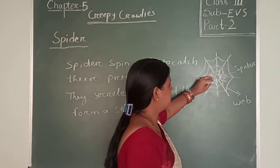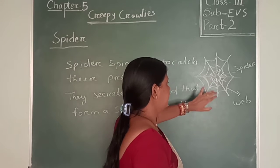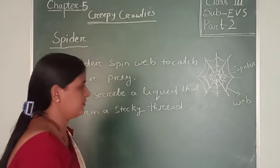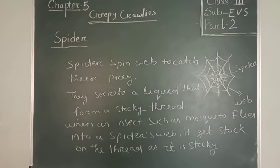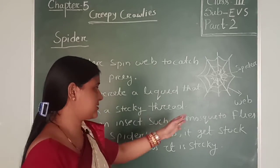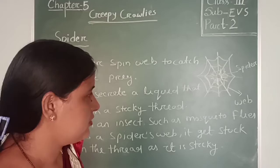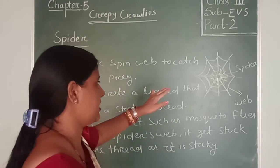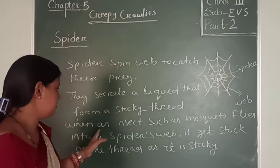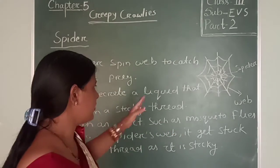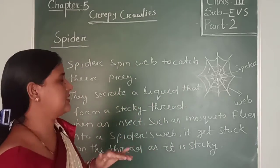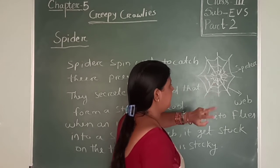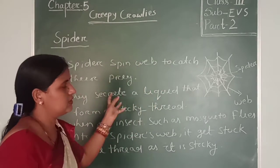When an insect goes through this thread, they are very sticky, so they get stuck inside the web. For example, when an insect such as a mosquito flies into a spider's web, it gets stuck on the thread of the web because it is very sticky. Then the spider easily eats that.